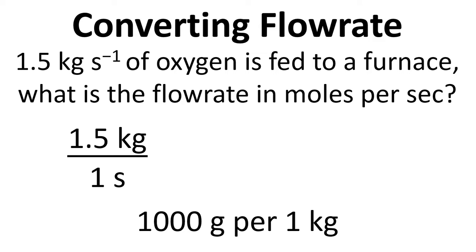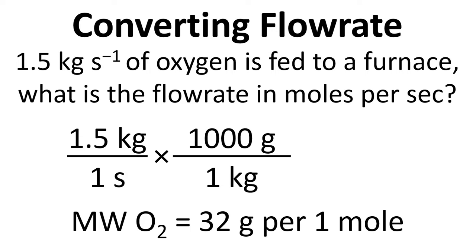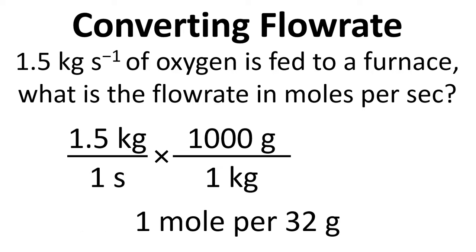Now we know that there's 1000 grams per kilogram, so we multiply by that. We also know for oxygen that we've got 32 grams per 1 mole, or 1 mole per 32 grams, so we multiply by 1 mole divided by 32 grams.